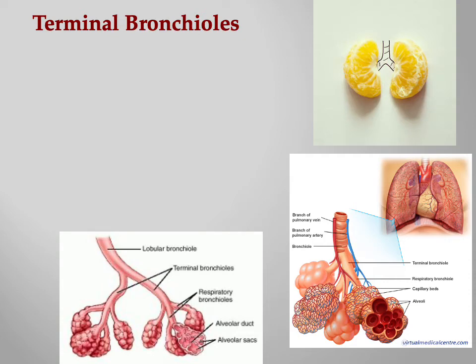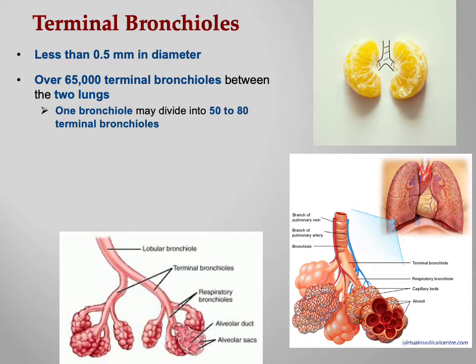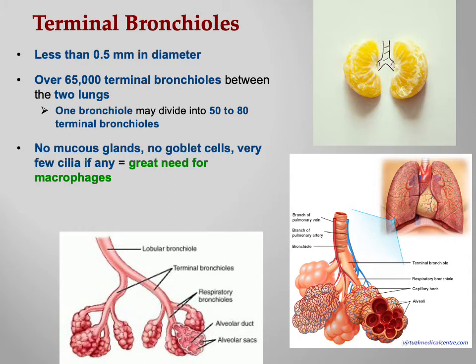Terminal bronchioles are the last bronchioles before respiratory bronchioles. They are less than half a millimeter in diameter — tiny. There are over 65,000 terminal bronchioles between the two lungs. Having so many is a backup system: if one or some get clogged or damaged, you've still got thousands more. One bronchiole may divide into 50 to 80 terminal bronchioles.